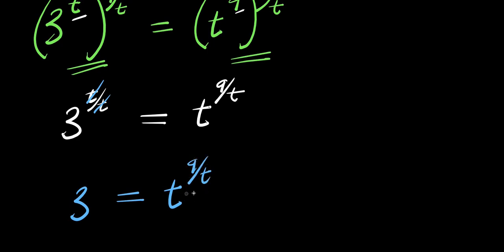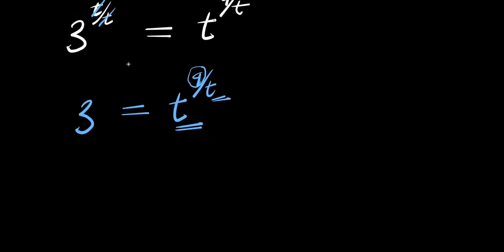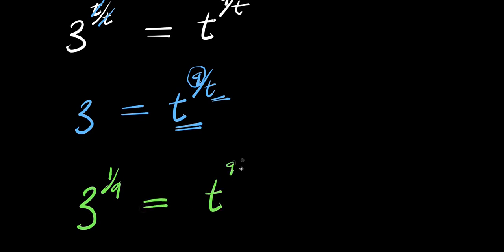Now if you observe, we have a variable here and we have another variable here at the denominator of this exponent, but here it is 9. So I can also decide to eliminate this 9 here. For me to achieve that, I will multiply each of these exponents by 1 over 9. So I'm going to have 3 to the power of 1 over 9, and this equals t to the power of 9 over t, raised to the power of 1 over 9.